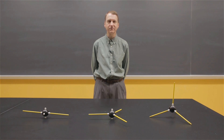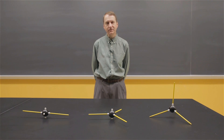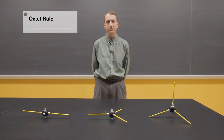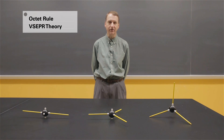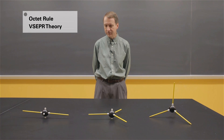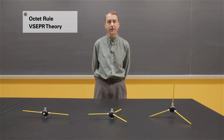We're looking at some models of molecules. These molecules will be following the octet rule, and their shapes are based on VSEPR, or valence shell electron pair repulsion theory, which states that the electron groups surrounding central atoms try to get as far apart as possible.